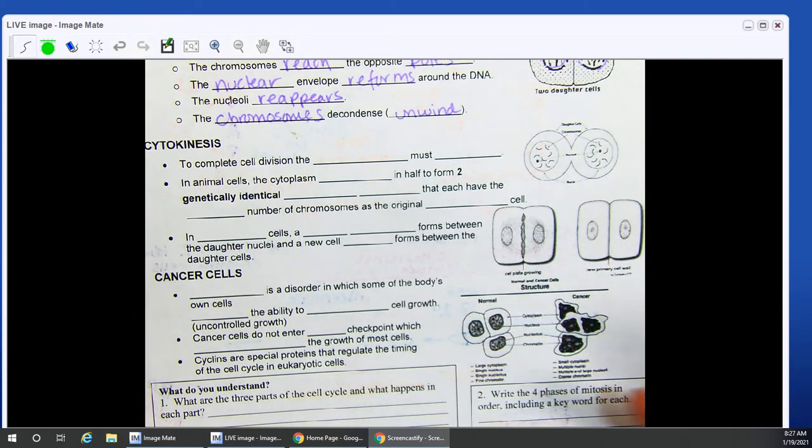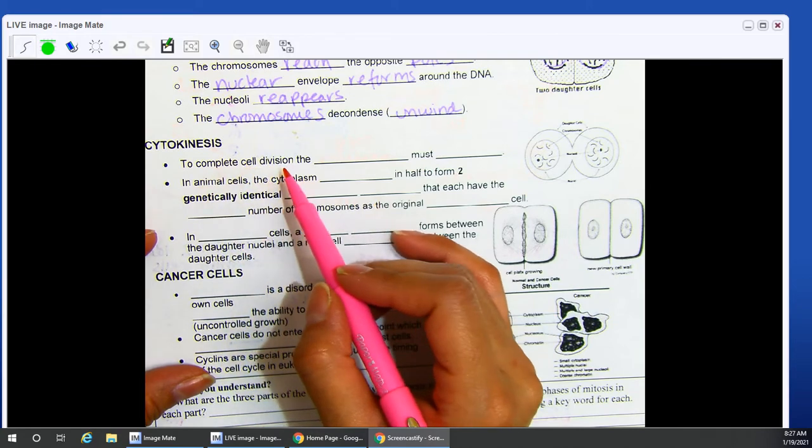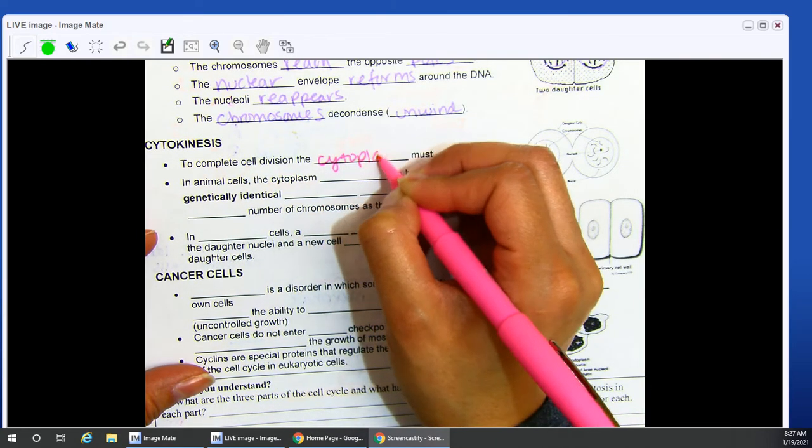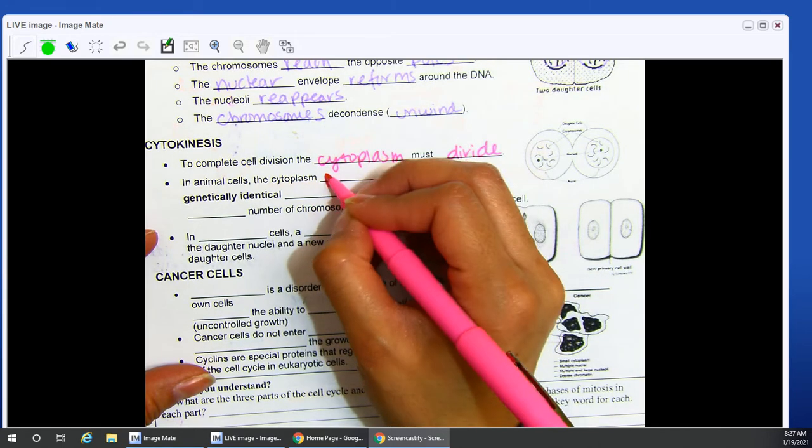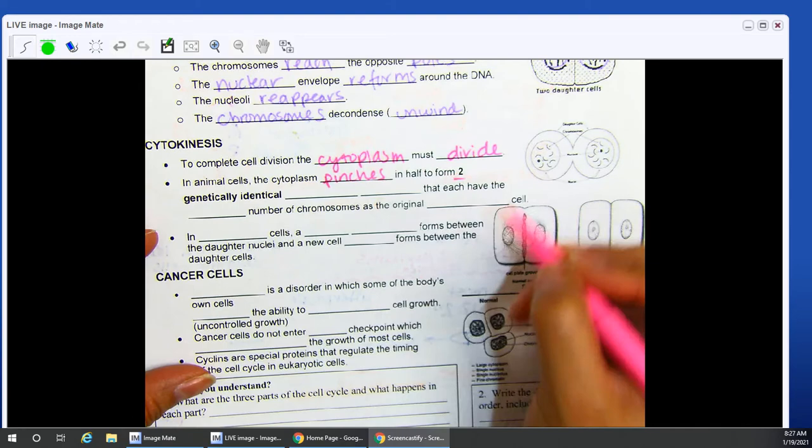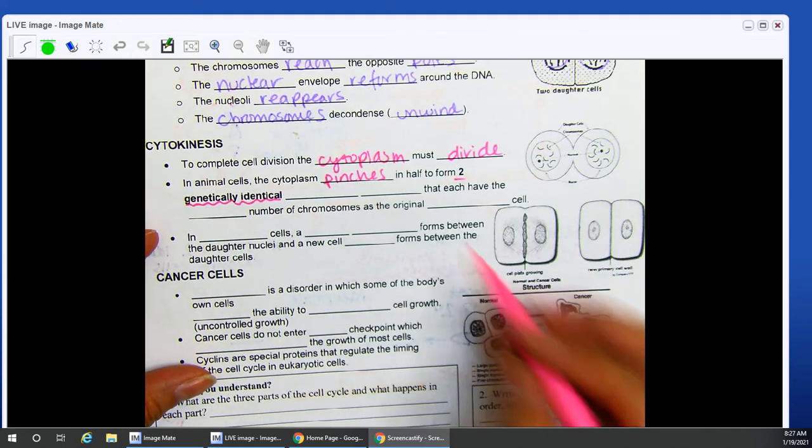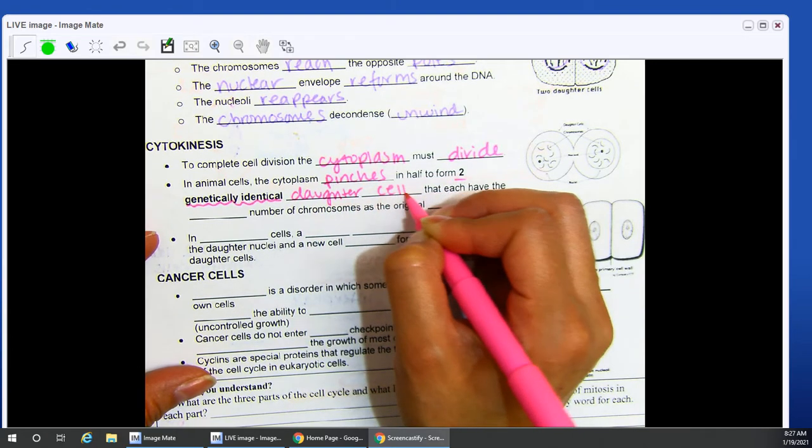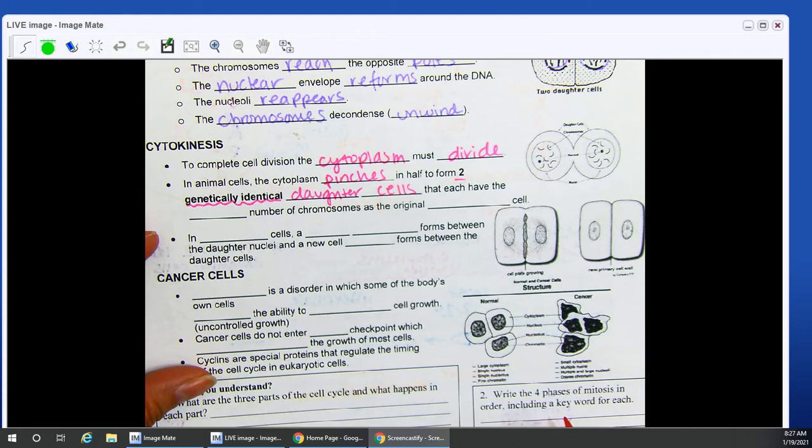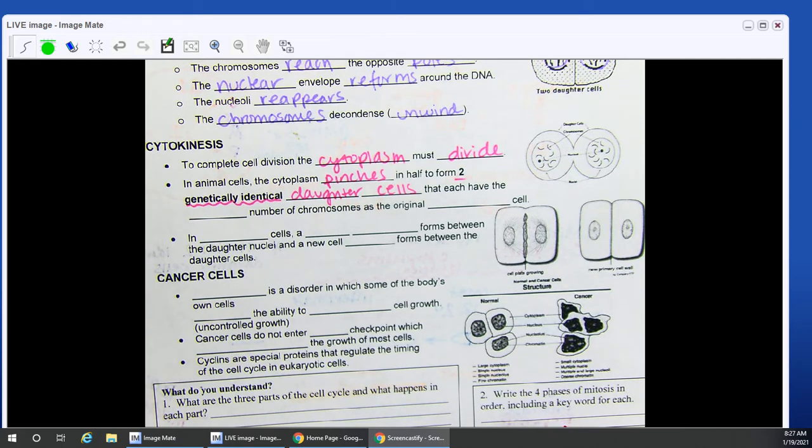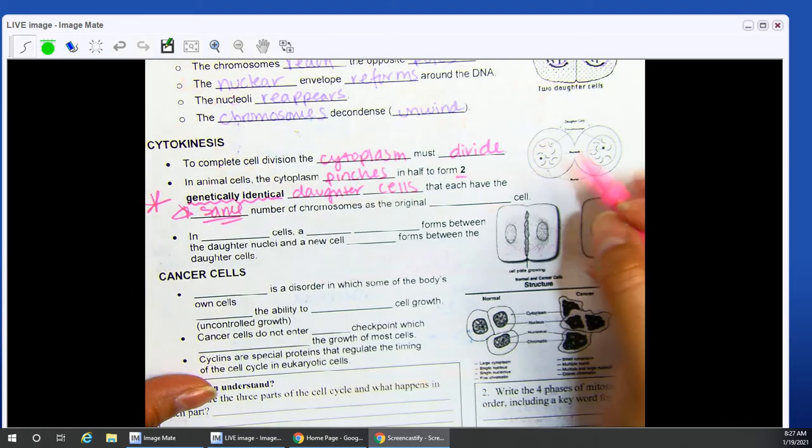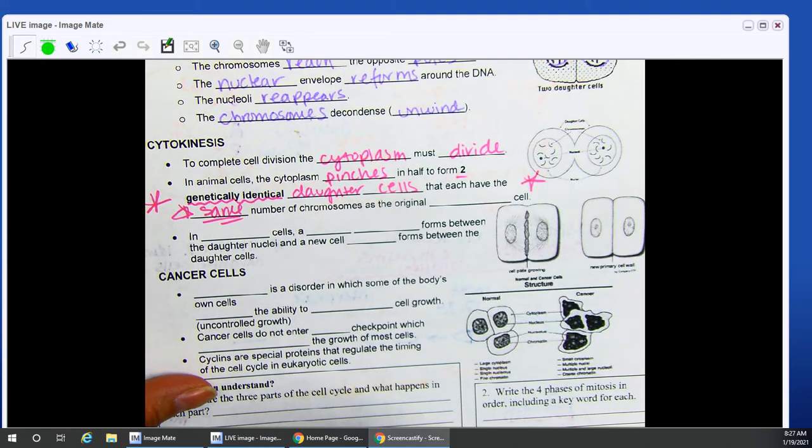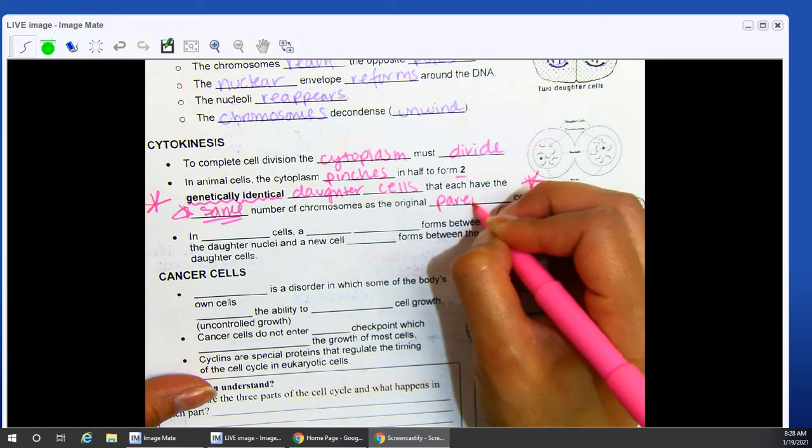Cytokinesis is your complete end to your cell division. To complete cell division, the cytoplasm must divide. In animal cells, the cytoplasm pinches in half to form two genetically identical daughter cells. So what's important about these daughter cells is that they each have the same number of chromosomes as your original parent cell. Remember, they are identical. They each have the same number of chromosomes as your original parent.